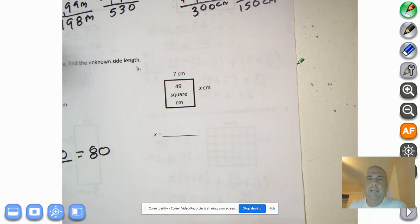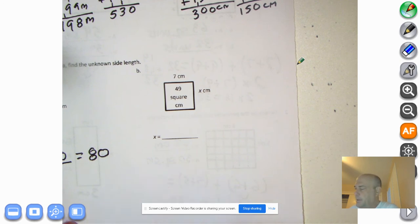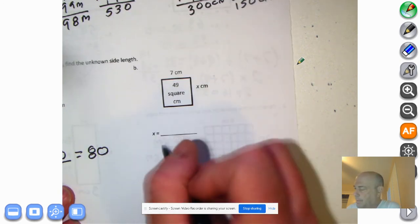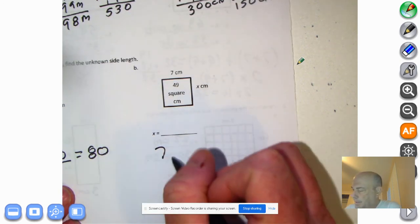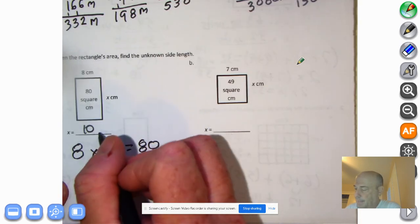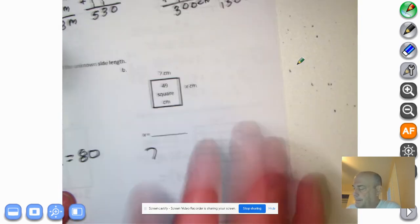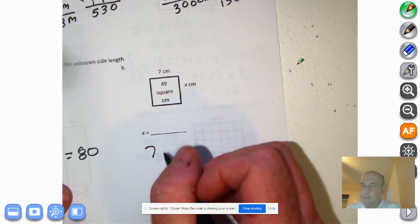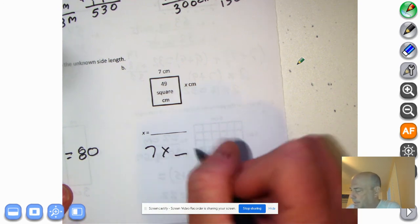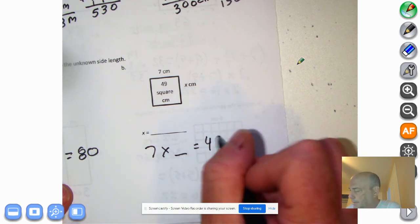And welcome back. What do we have here? Let's set up the problem. We know that seven. Actually, I should put x equals. Yeah, we're fine there. Never mind me. So seven times a number equals 49.